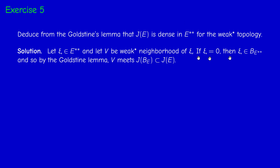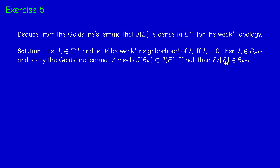If psi is 0, there's nothing really to prove, because psi is in the unit ball of E double star, and so it is in the closure of J of E, which meets J of E. Otherwise, we assume psi is not 0, and therefore we can divide by the norm of psi. Then psi over its norm is in the unit sphere, so it's in the unit ball of the bidual.